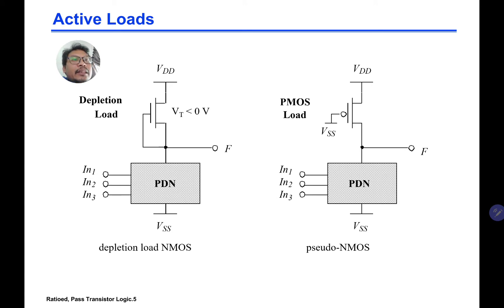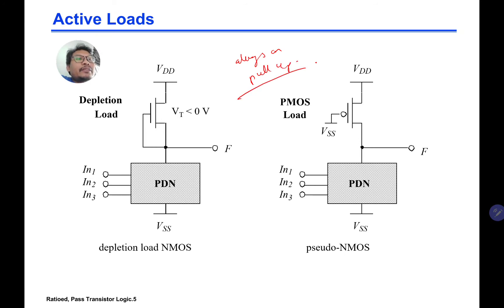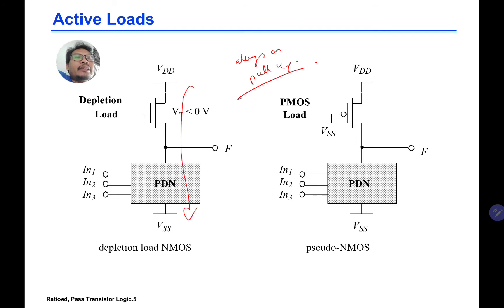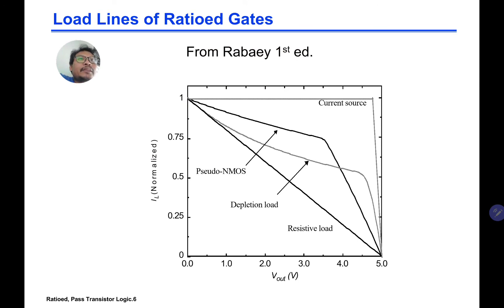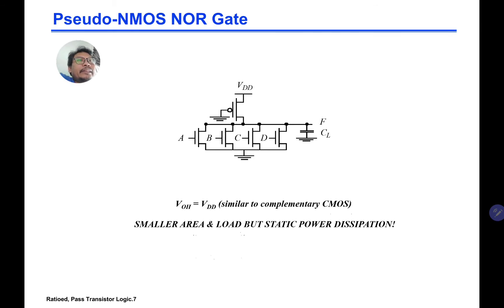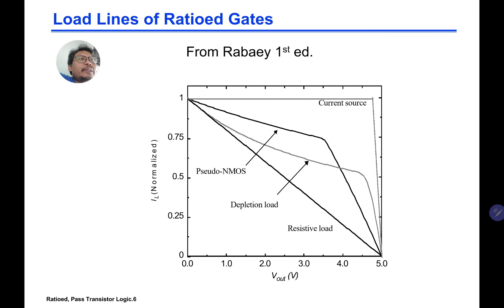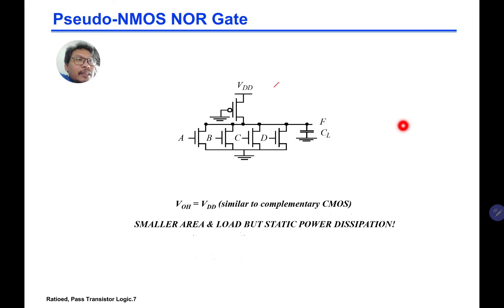For depletion load, the gate is connected to ground and the pull-up network is always on. Similarly, for the PMOS load, the pull-up is always trying to pull up even when the pull-down is trying to pull down. Therefore, you have a static current flowing from VDD to ground. I'll skip the load line and look at the pseudo NMOS example. Pseudo NMOS is based on the PMOS load type of ratio logic.